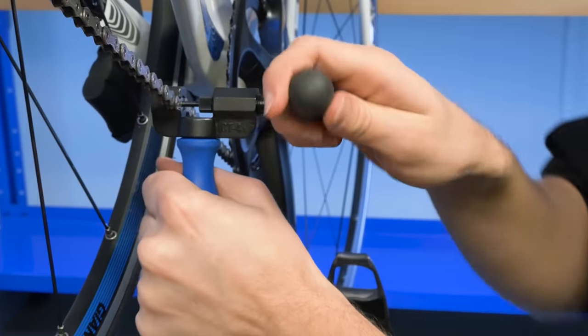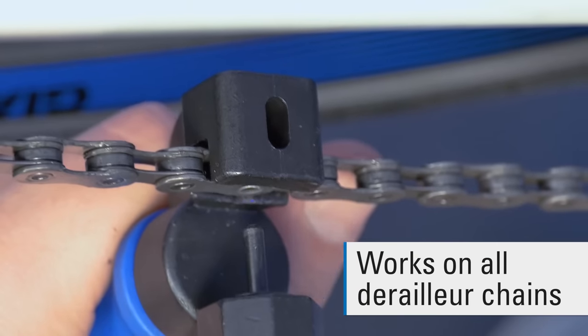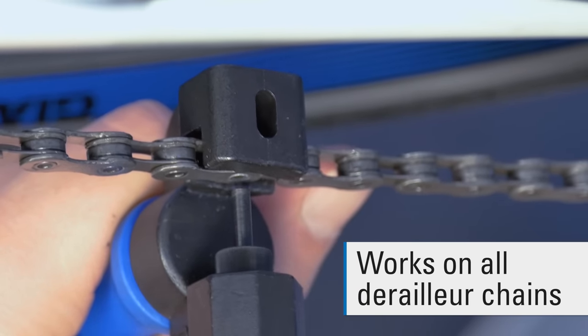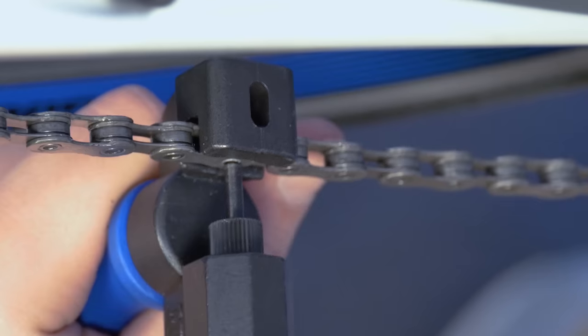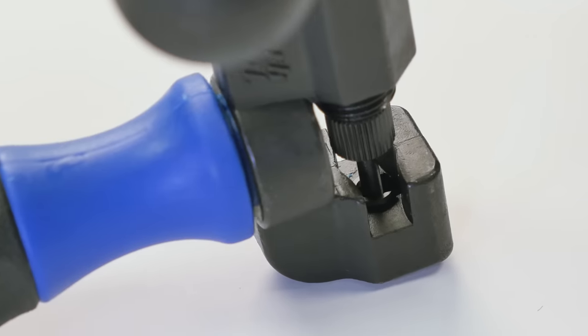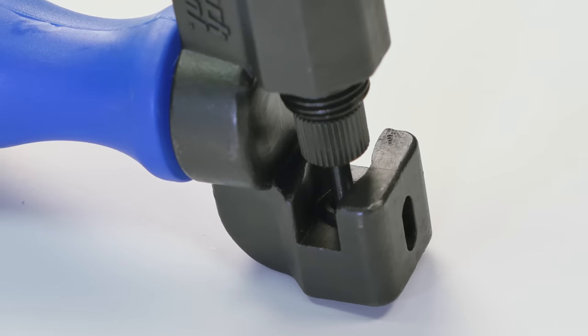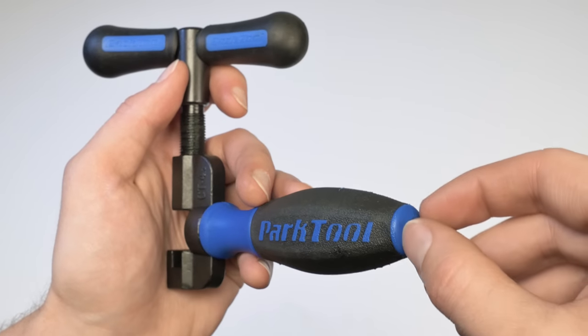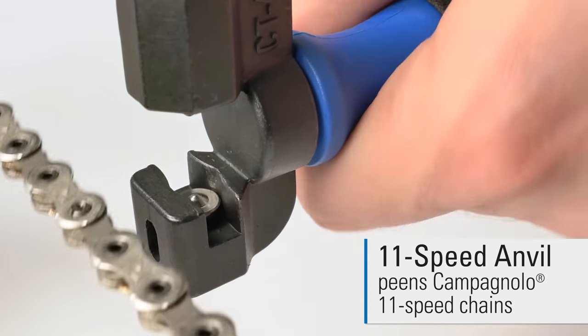The CT 4.3 works on all derailleur chains and is specially designed for the tight tolerances and narrow profiles of modern 10 and 11 speed chains. The integrated link pocket ensures precise alignment and it includes a removable anvil to peen Campagnolo 11 speed chains.